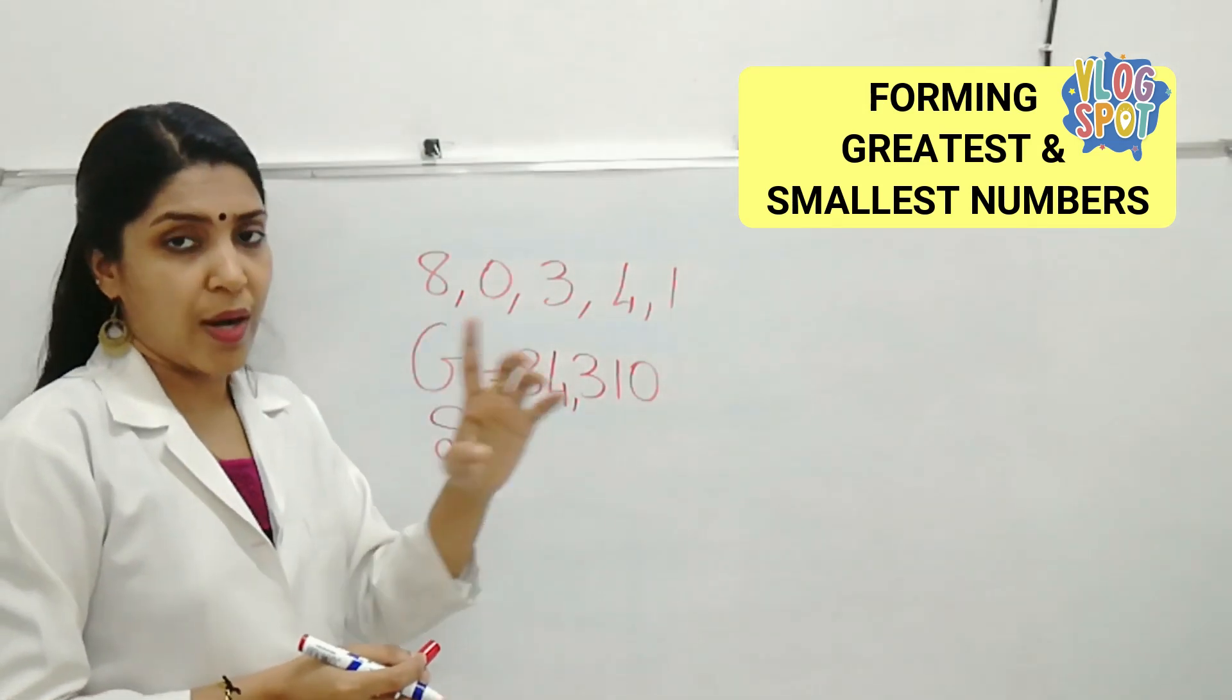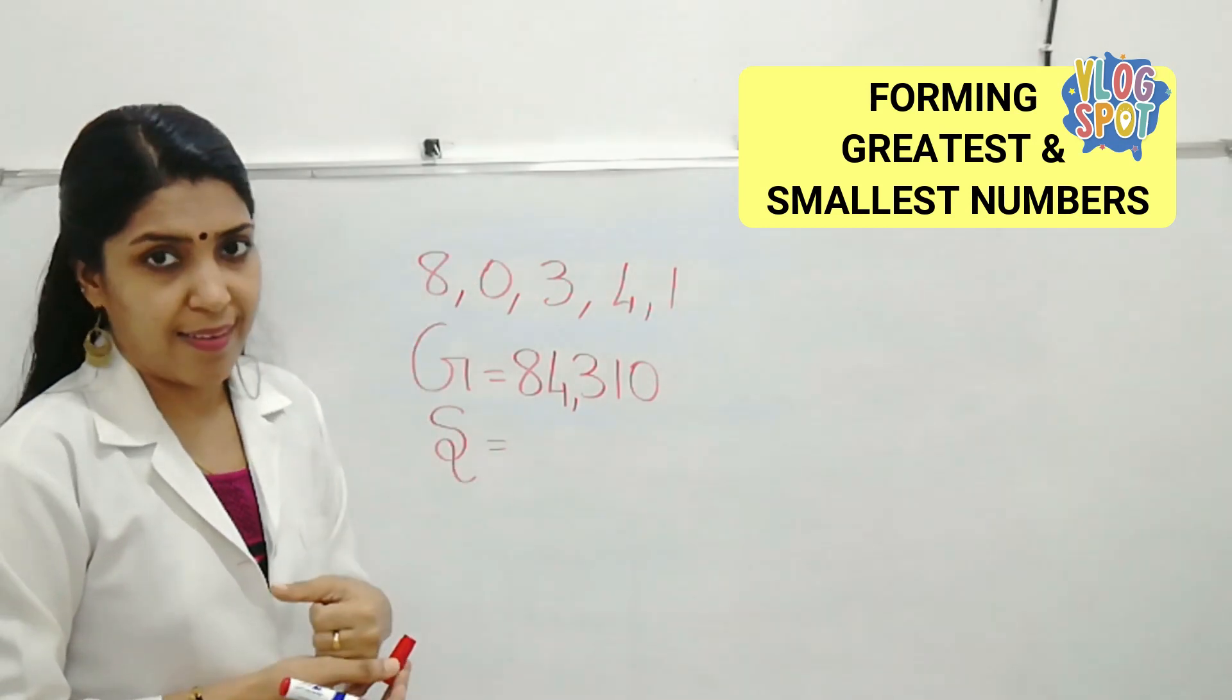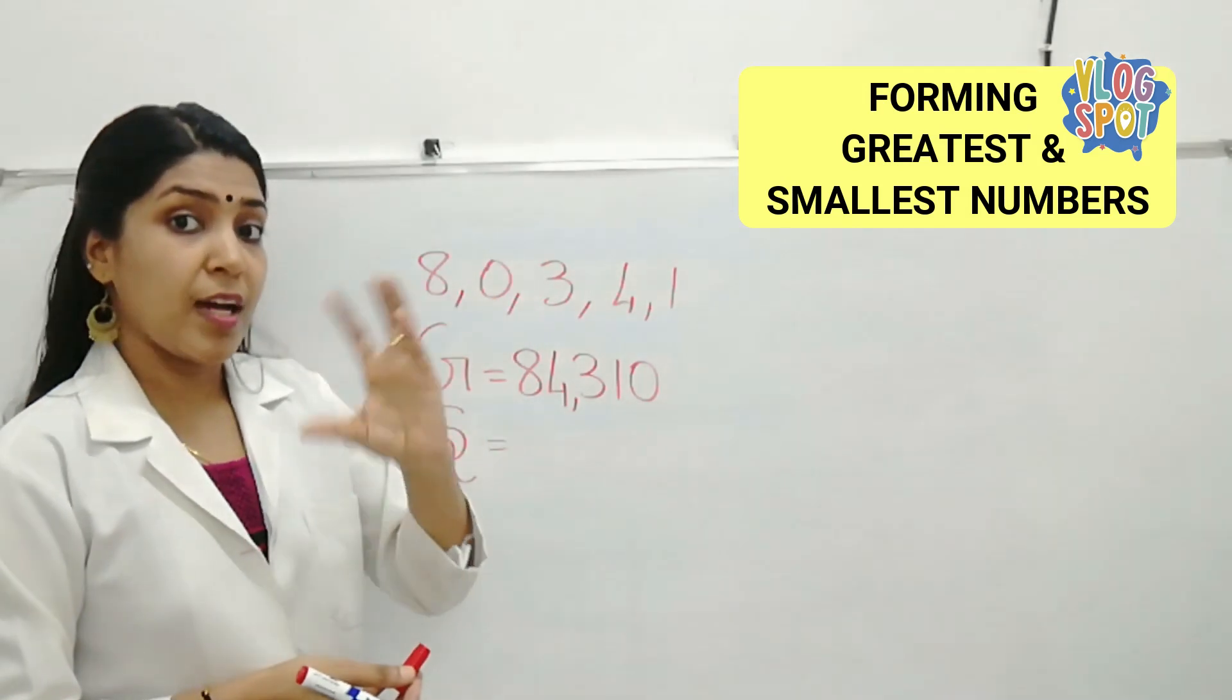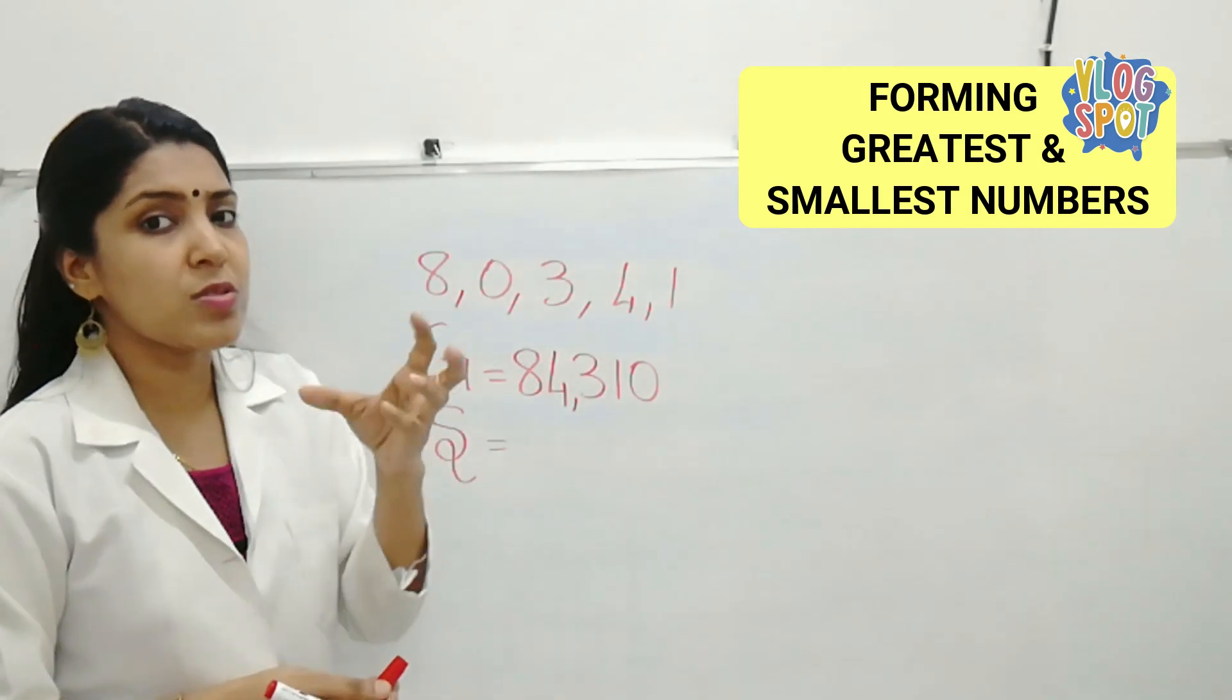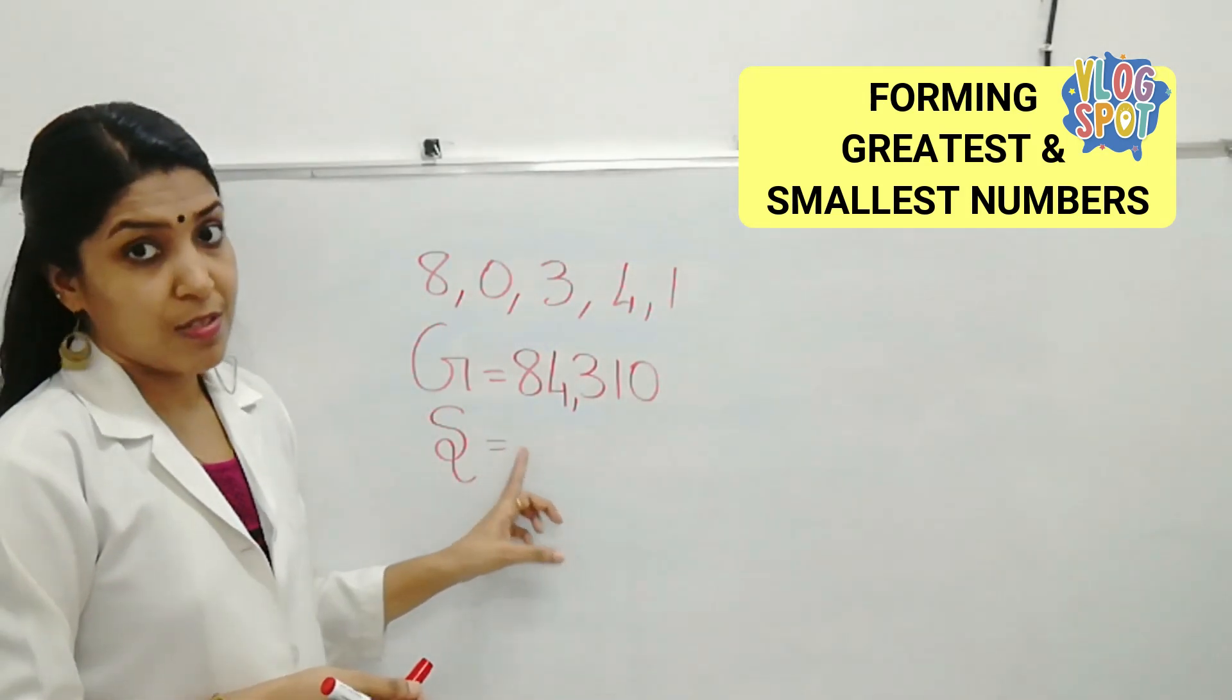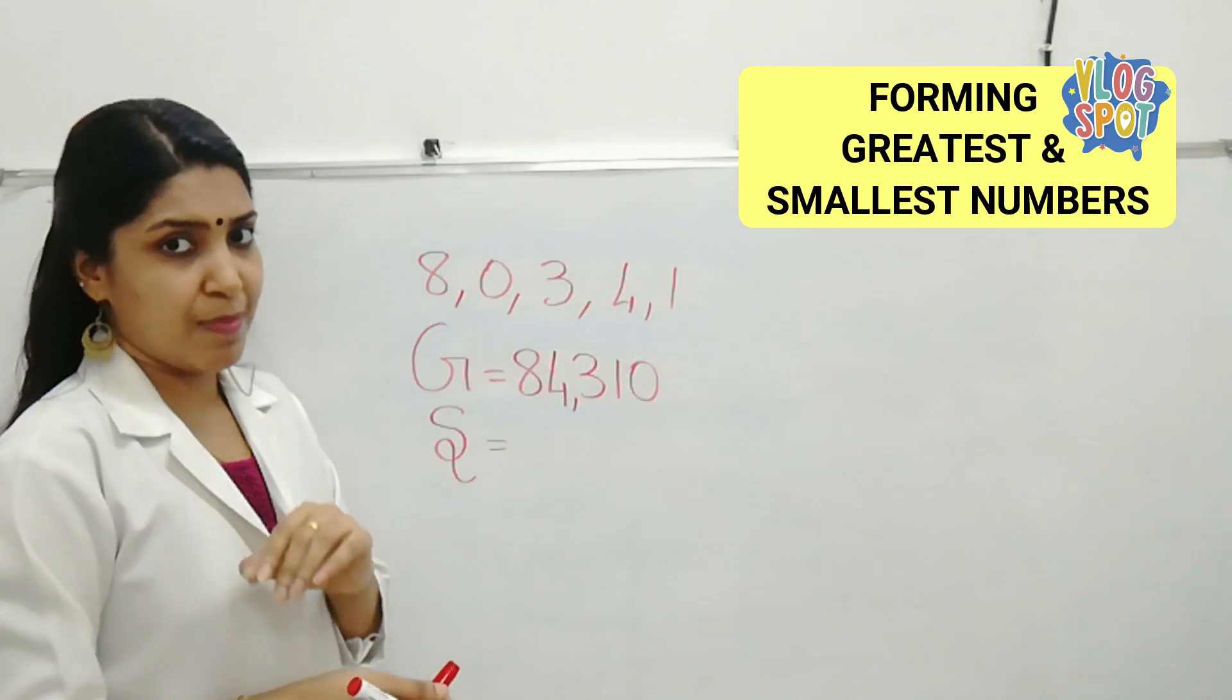If 0 stands with any number, the number's value will increase. If 0 stands with 1, what is the value of 1? The value of 1 will increase by 10, right? Similarly, 0 stands with any number, the value of that number will increase. But 0 stands alone don't have any value. So, 0 should not come first. 0 should always come in the second place.